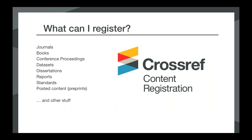What content can you register? We split content into several defined content types. We currently support content registration for journals and journal articles, books and book chapters, conference proceedings and papers, reports or working papers, dissertations, standards, posted content — which most often encompasses preprints — and datasets.